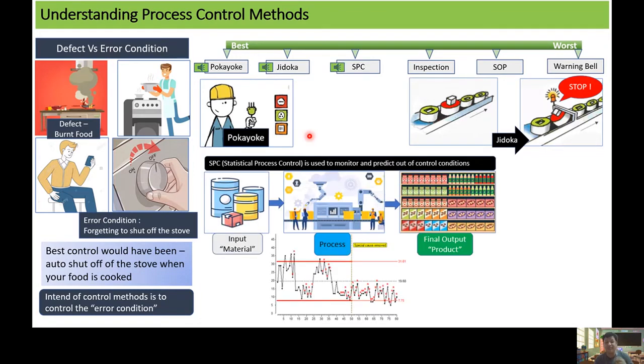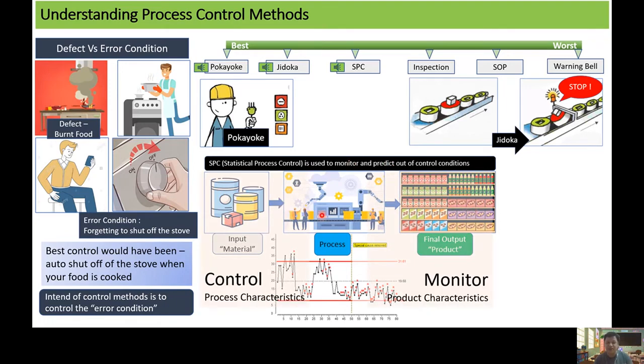The third best control method is known as SPC, Statistical Process Control. Statistical Process Control is used to monitor and predict out of control conditions with the help of control charts in a manufacturing process. If you consider a system where there is an input material and then there is a manufacturing process which is converting the input material into a final product, the initial phase of this entire system has process characteristics which can be controlled...